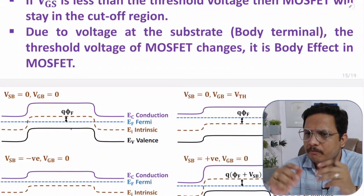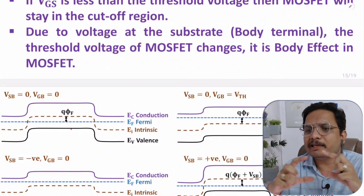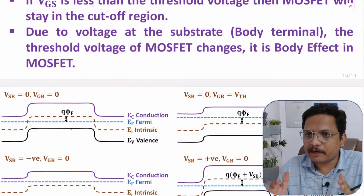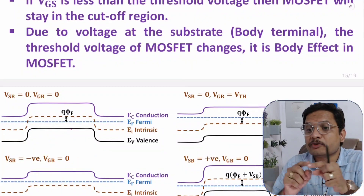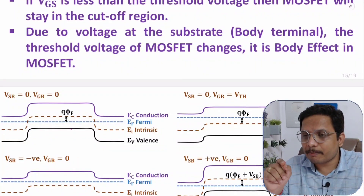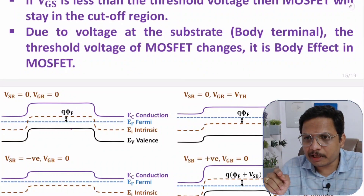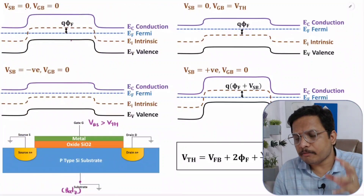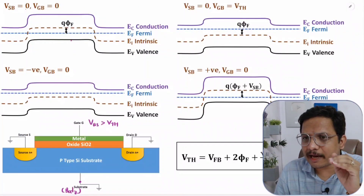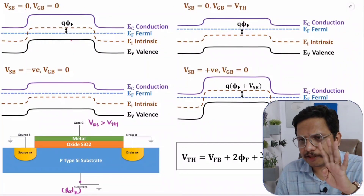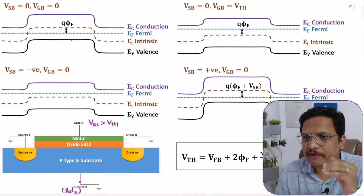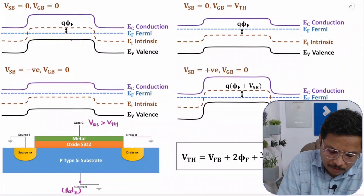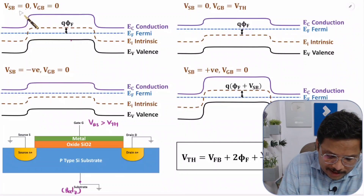Due to voltage at the body terminal, the threshold voltage of MOSFET changes, and that is the body effect. I'm going to explain body effect using energy band diagrams through four different case studies, by which you can easily understand how body effect changes threshold voltage.